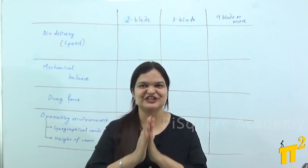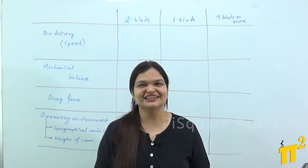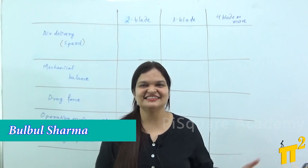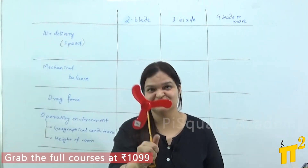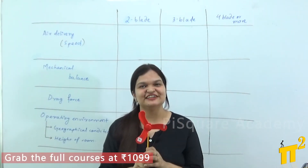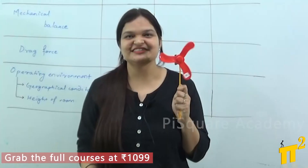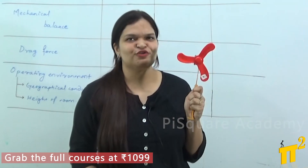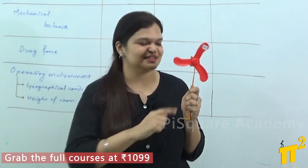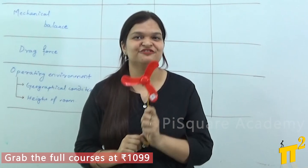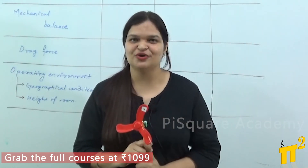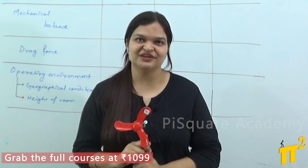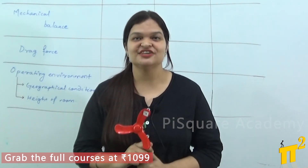Hello everyone. Namaskar. Welcome to PiSquare Academy. This is Bulbul Sharma with a very interesting topic. What is it? A fan. Yes, a fan. What about this fan? We can mark some red color, some yellow color. But of course, it has three blades. So today's interesting topic is about why a fan has three blades.